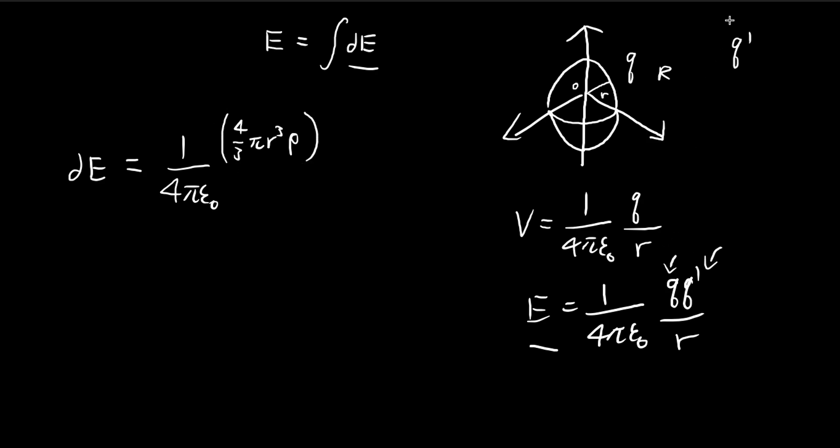And then q prime, q prime is the additional charge that we're bringing in. And then in our case, we're bringing in an additional layer of charge. So 4 pi r squared, that's the surface area, times dr, so we have a very thin spherical shell, multiplied by the charge density. So this is the additional charge that we're bringing in. And then we're going to bring it all the way to the surface, so we just divide it by r, so that's the distance.